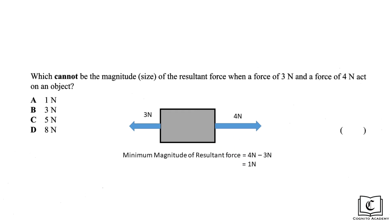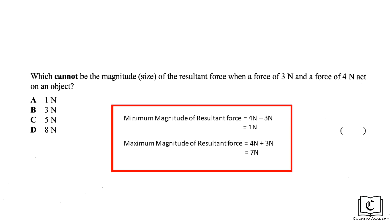So let's take a look at the maximum resultant force that can happen. The maximum resultant force is when both forces of 3 newtons and 4 newtons act in the same direction, giving us a maximum force of 7 newtons. So any resultant force greater than 7 newtons is impossible.